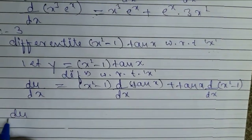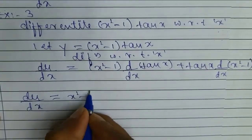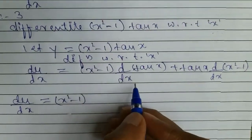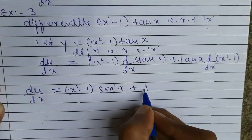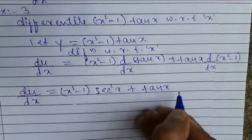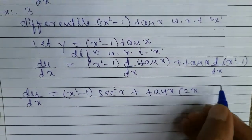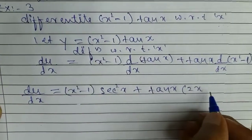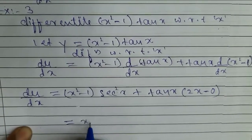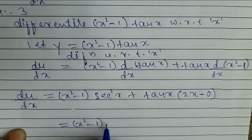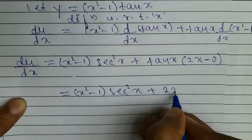So here, dy by dx is equal to x square minus 1 — we know the differentiation of tan x is sec square x — plus tan x, we know the differentiation of x square is 2x, but we know the differentiation of any constant number is zero. So here we get the final answer: x square minus 1 into sec square x plus 2x into tan x.